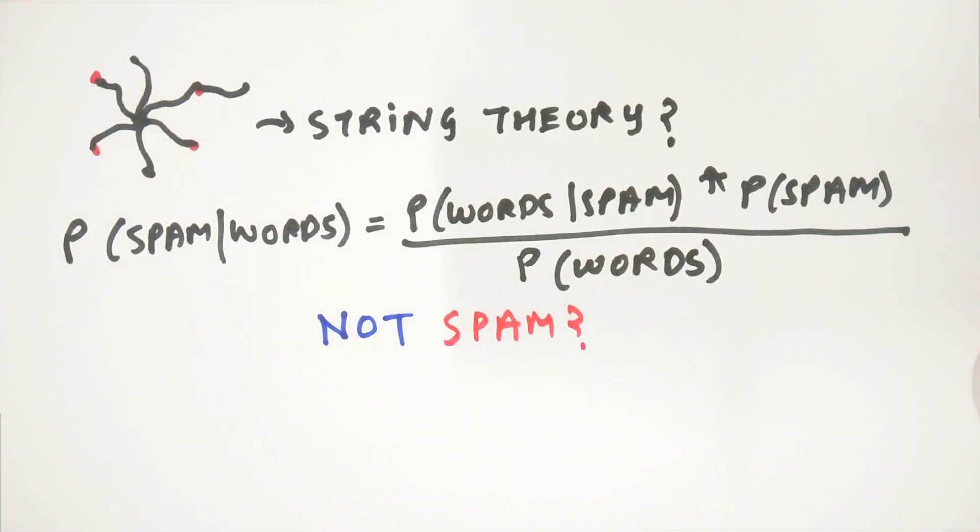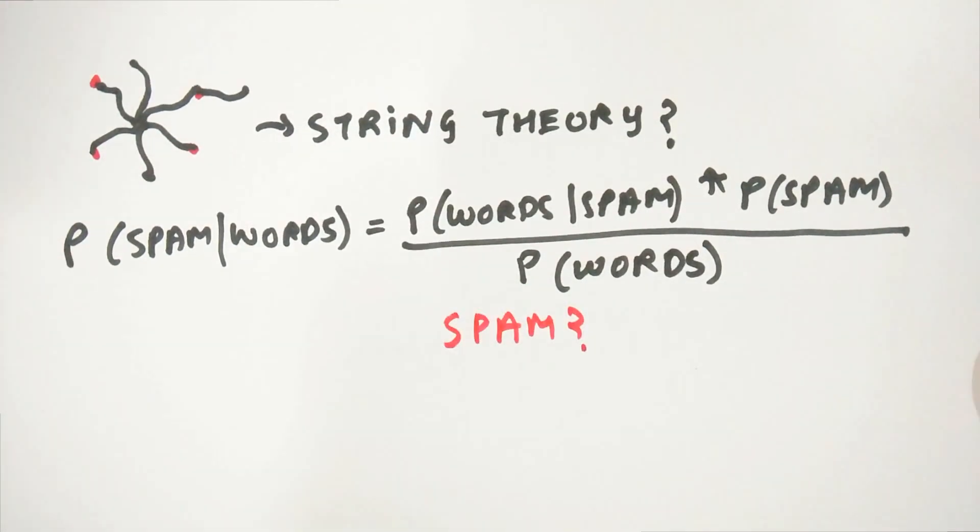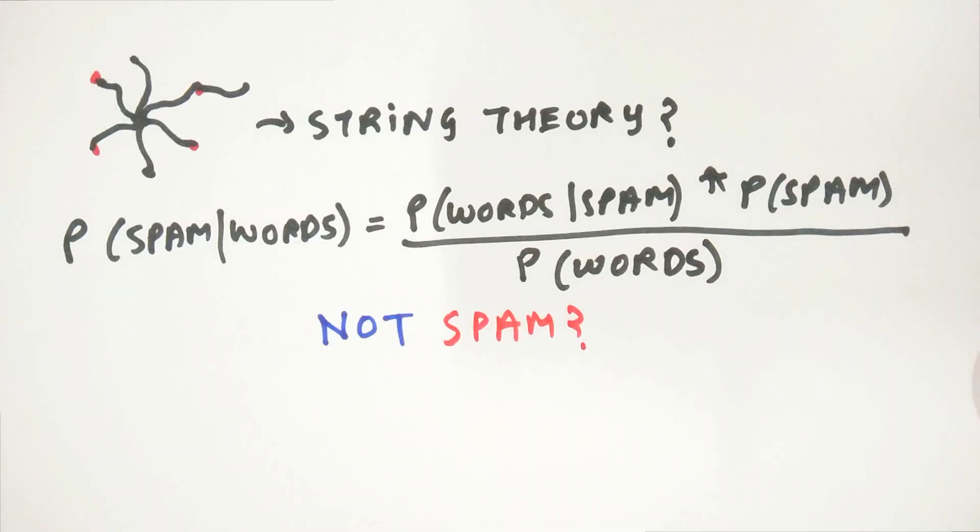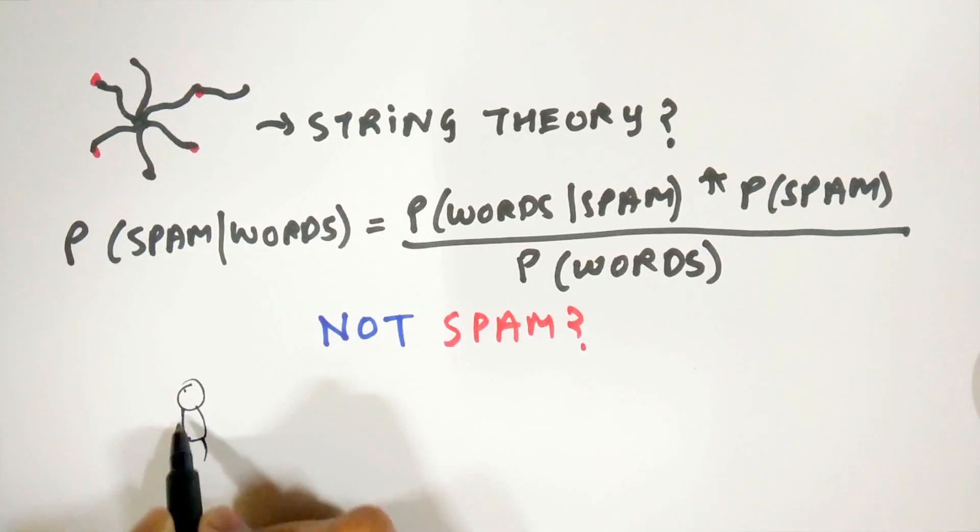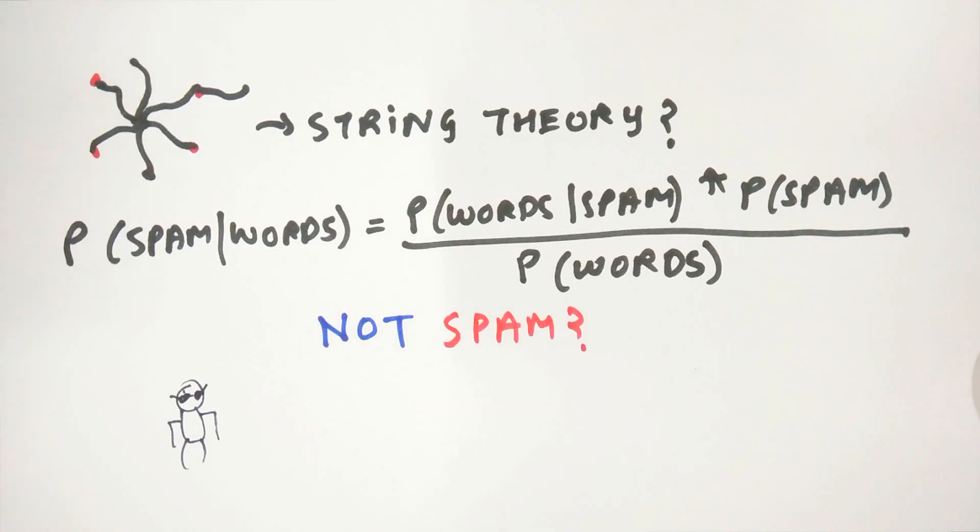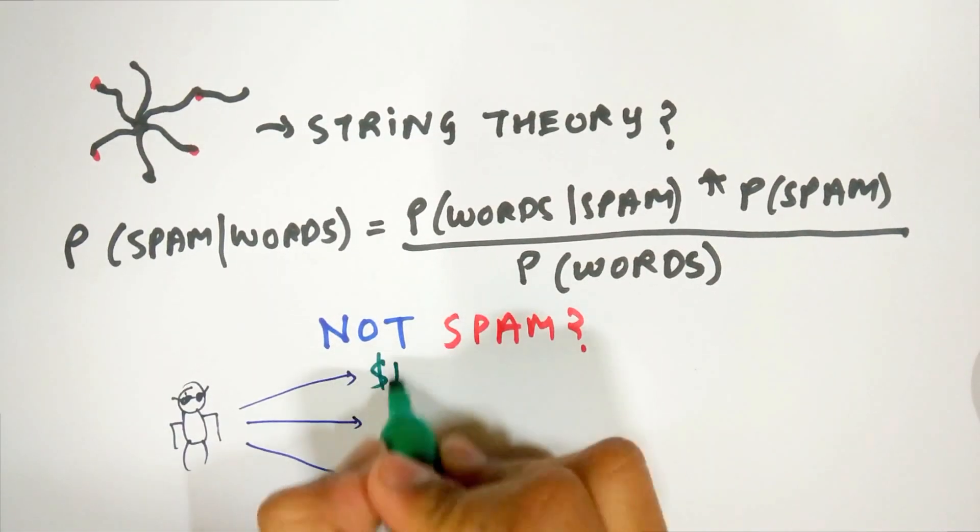This approach along with various other intelligent algorithms run to detect if an email is spam or not. In finance, Bayes' theorem can be used to calculate the risk of lending money to potential borrowers.